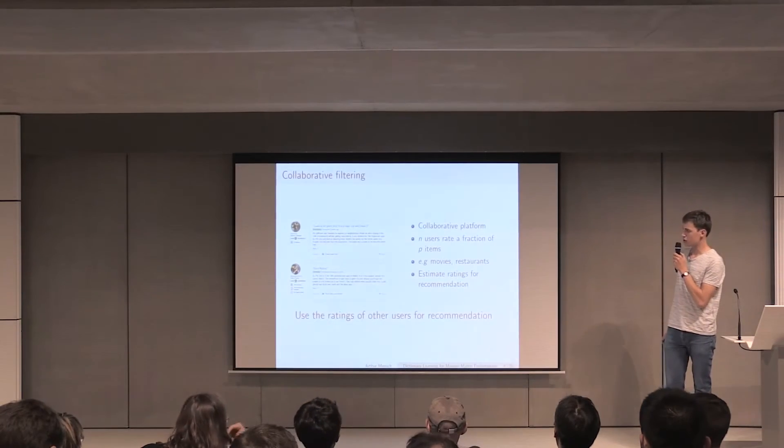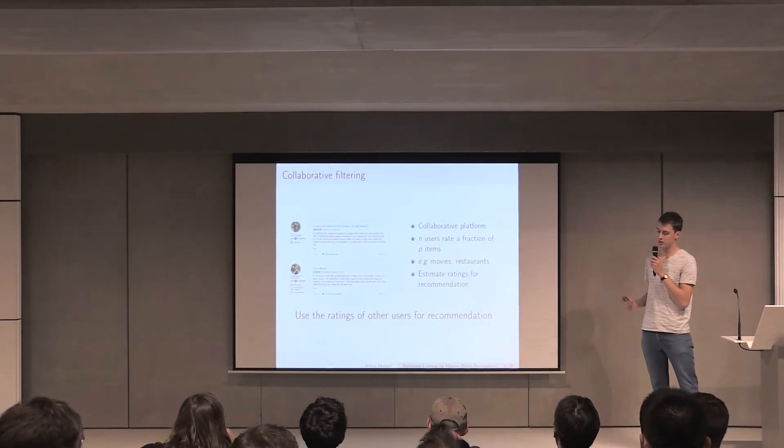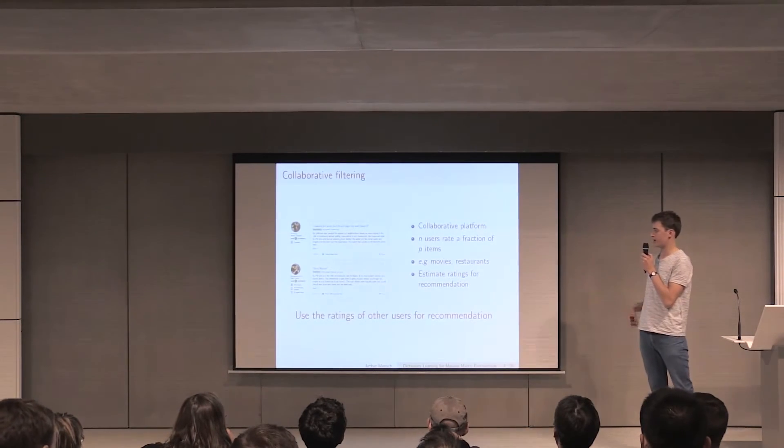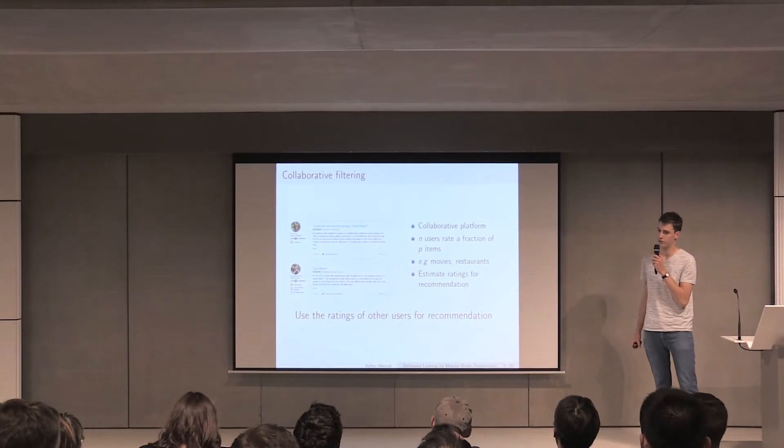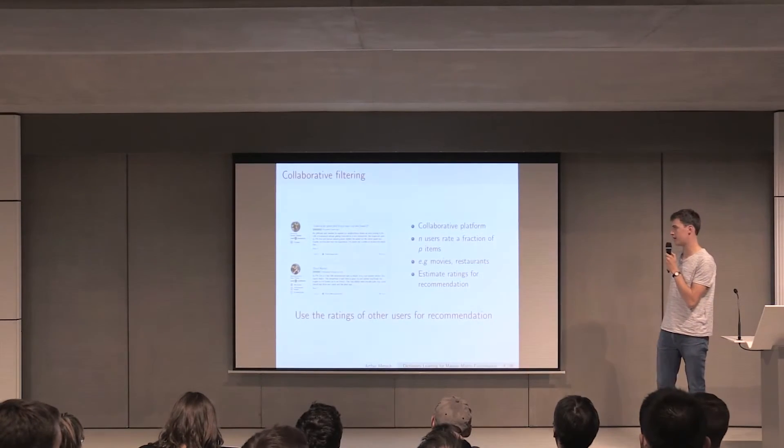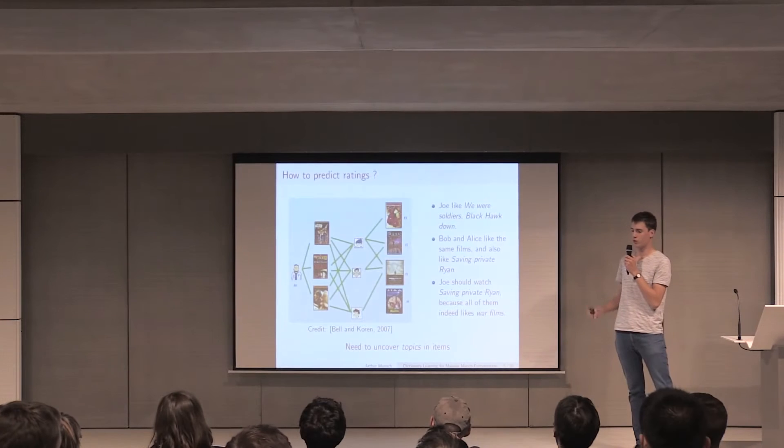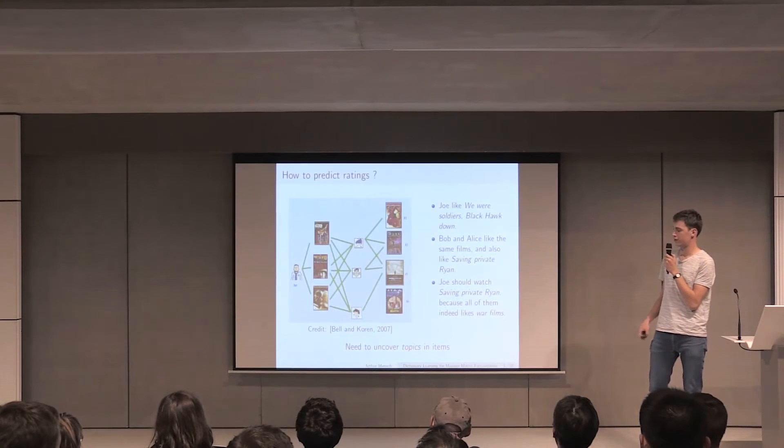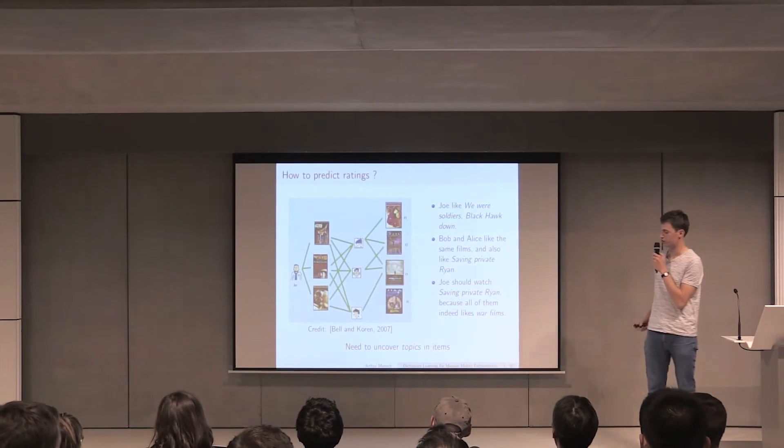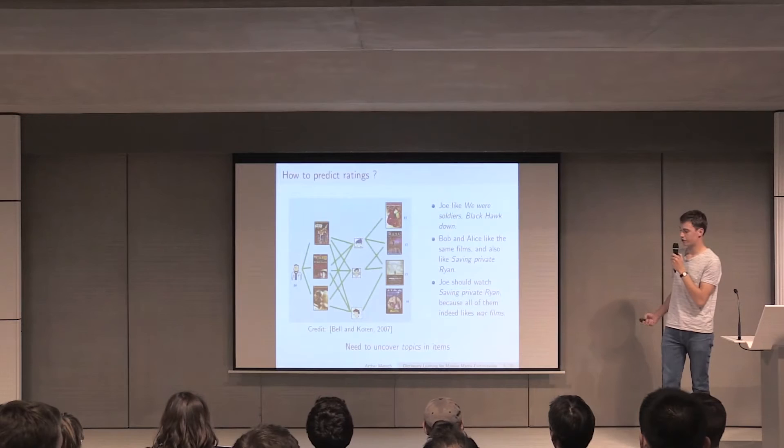I guess you all know about collaborative filtering. It's a technique that uses the ratings of many users to predict the ratings that were not given by a user, and you want to use these ratings to recommend a user to watch a movie or to go to a restaurant or to click on an advertisement. The essential idea is that if you have a guy that likes two war movies, and you have other guys that like two war movies and Saving Private Ryan, then you want to advise the first guy to watch Saving Private Ryan.